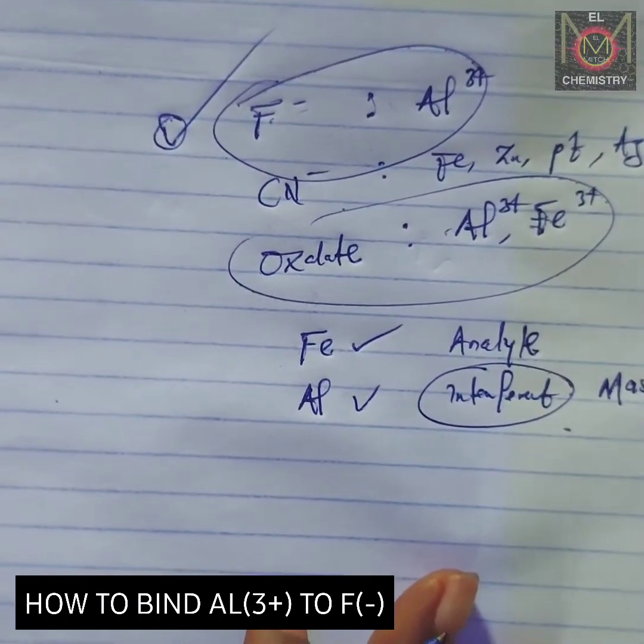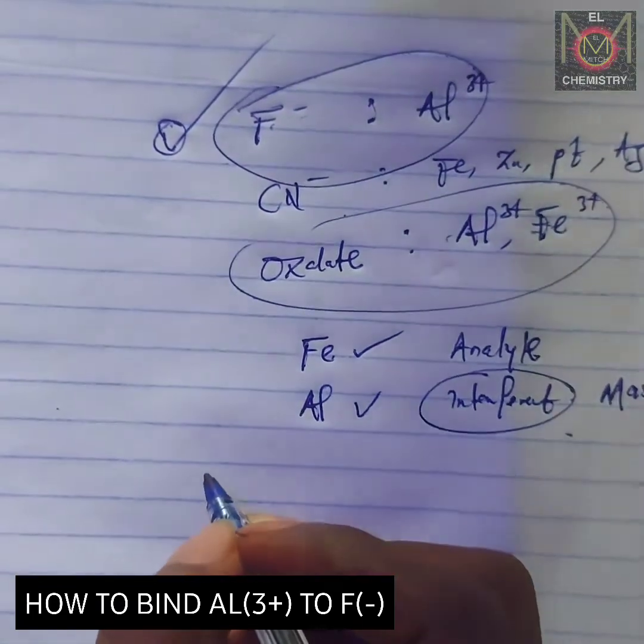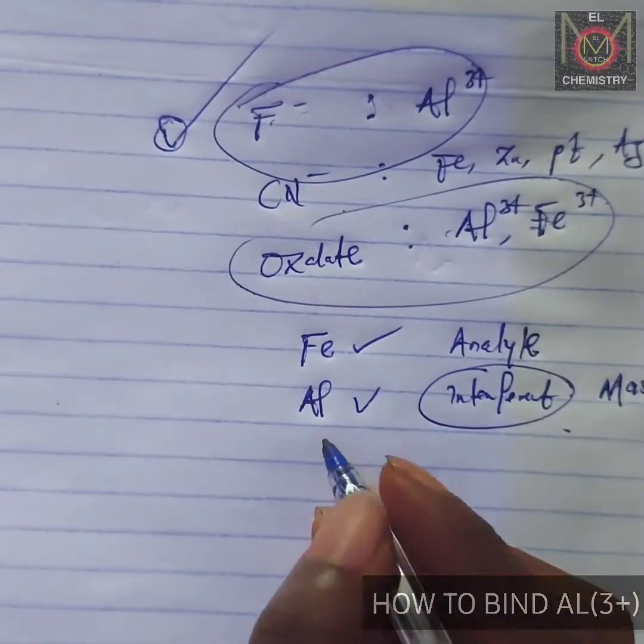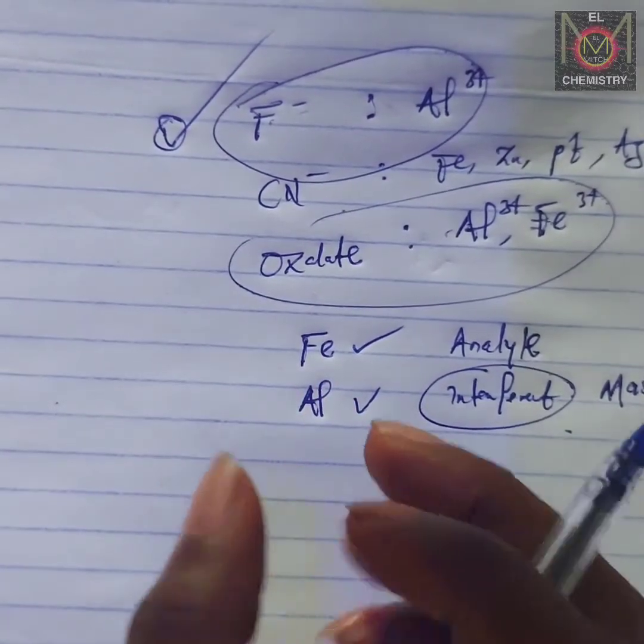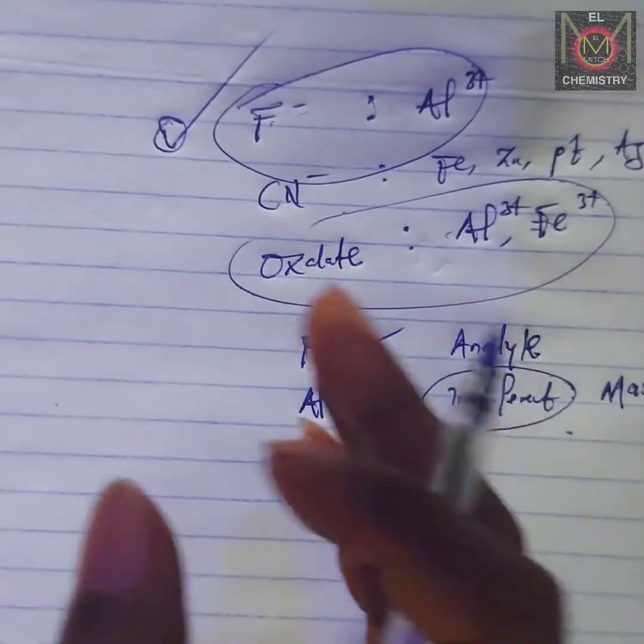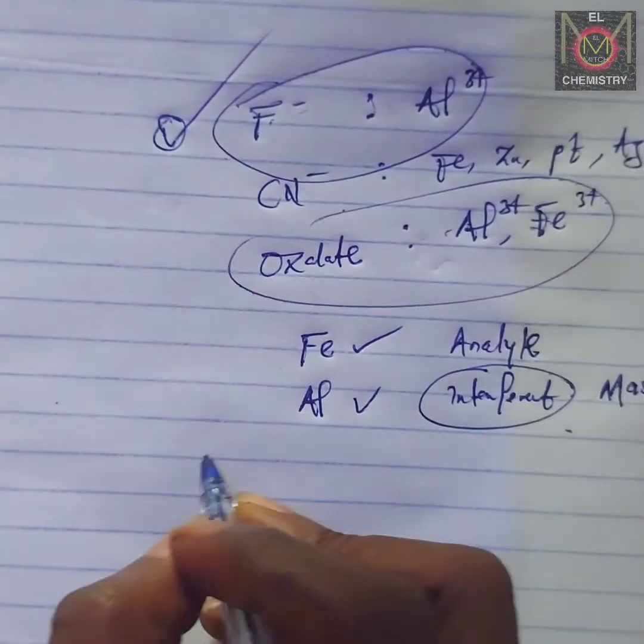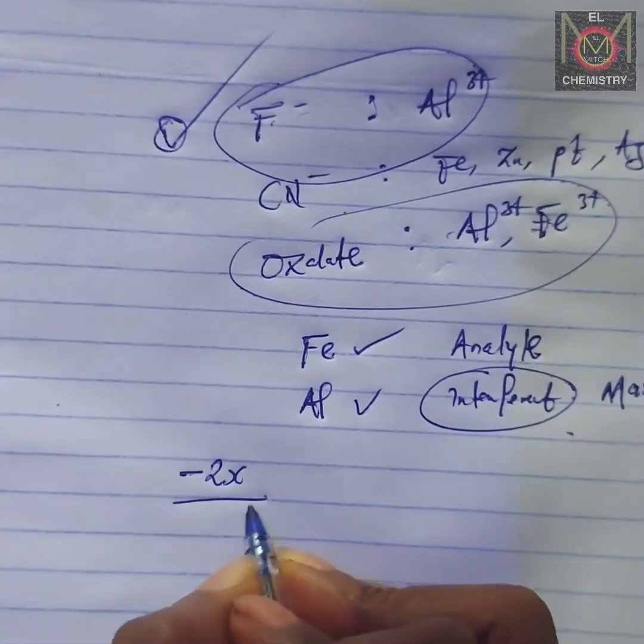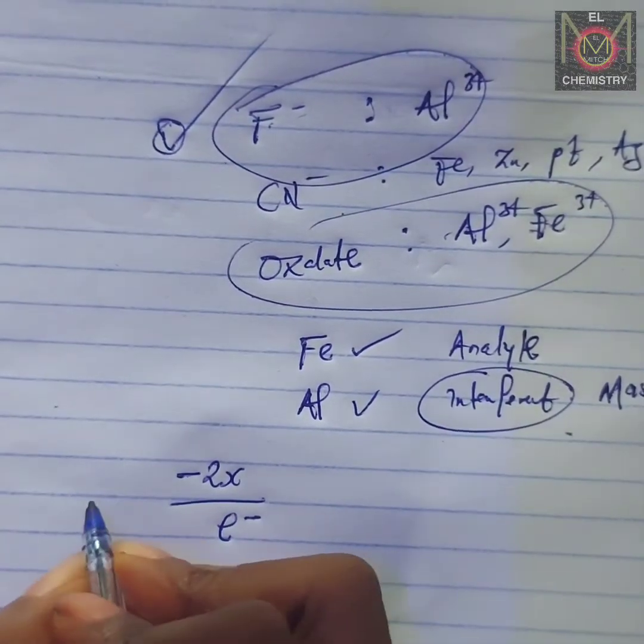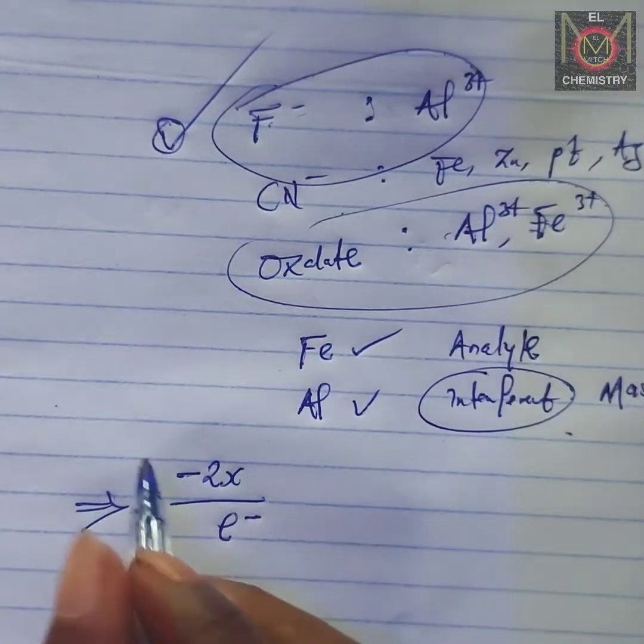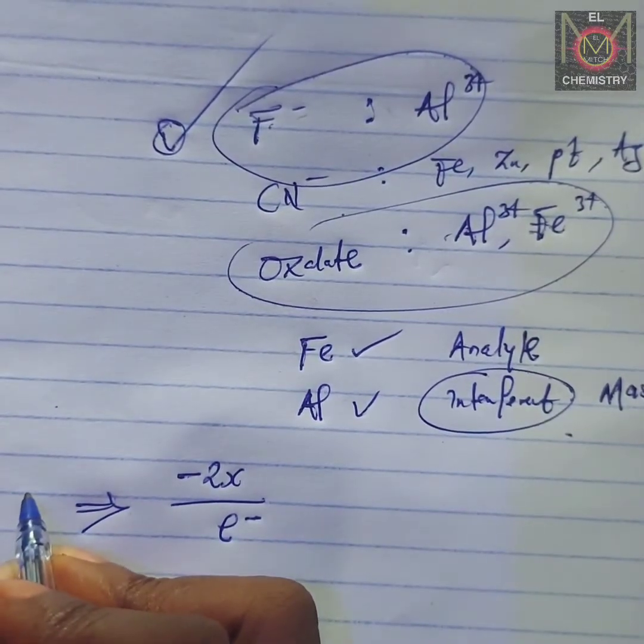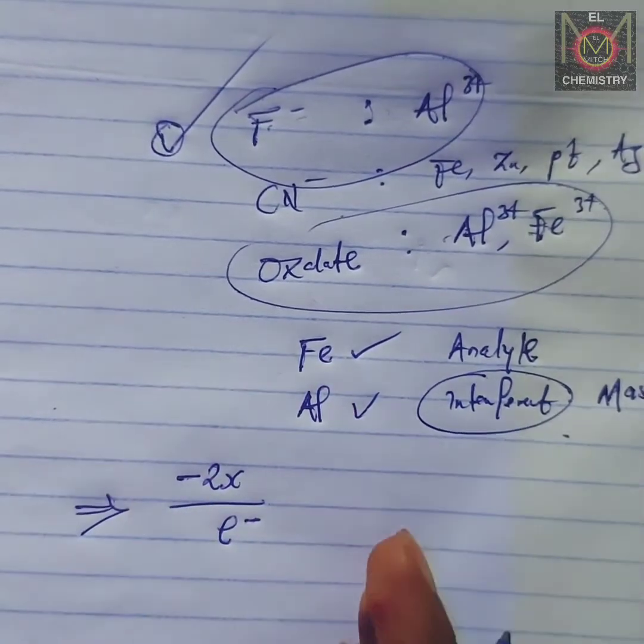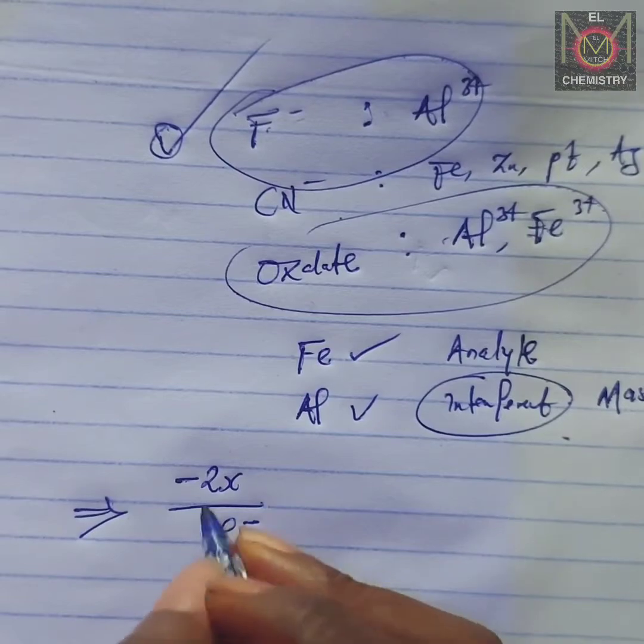How would aluminum get masked by this fluoride ion? There's a simple formula I derived personally that you can use to find what your complex is going to look like—what the formula of your complex will be. That formula is: minus 2x over charge. This gives you the coordination number, meaning the number of ions that will be surrounding your particular interference.